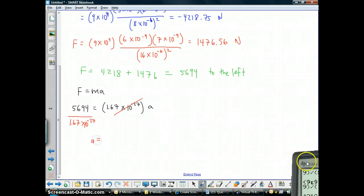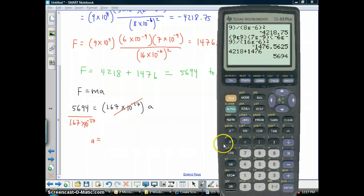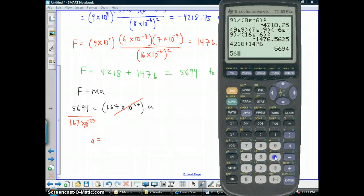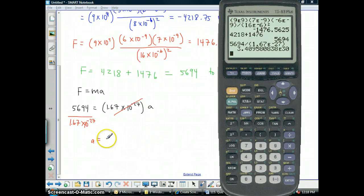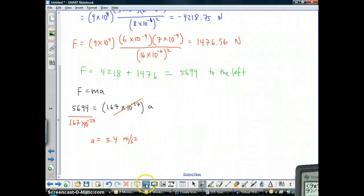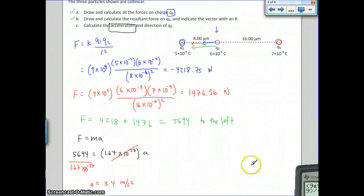So, the acceleration ends up being, after you divide, 1.67 E negative 27. It's a pretty large acceleration, 3.4, and then the units are meters per second squared. It's the units for acceleration. So, the entire problem looks like that.